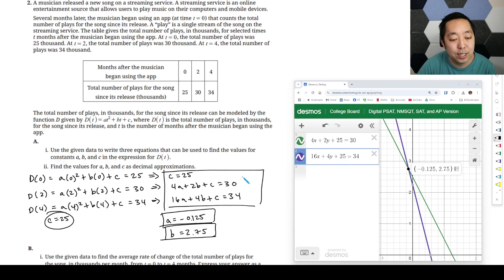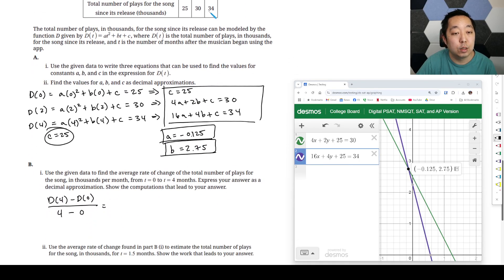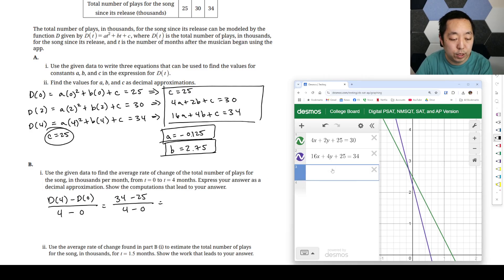Use the given data to find the average rate of change of the total number of plays for the song in thousands per month from 0 to 4. Express your answer as a decimal approximation. So average rate of change, you should recognize, it's like a slope, right? It's a slope between two points. You're going to do the y values, and the two locations are 0 and 4. So that's going to be 34 minus 25 divided by 4 minus 0. That's going to be, fraction 34 minus 25 over 4, that's 2.25.